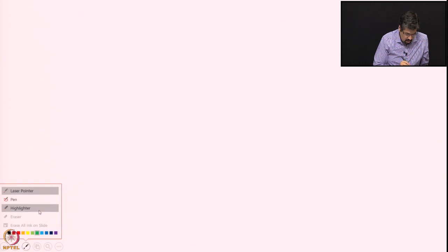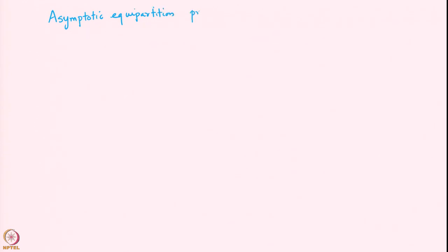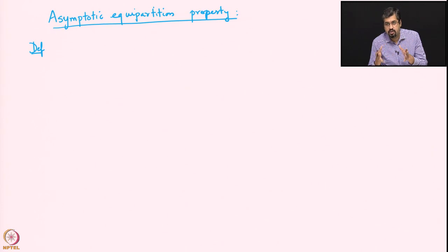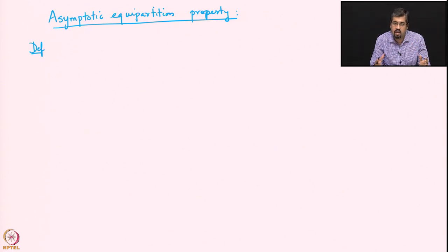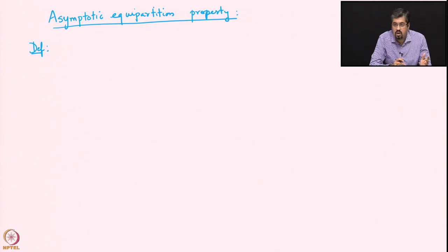This property is ensured by what is called the Asymptotic Equipartition Property. To introduce this property, we will give a construction of the set A_n(ε) and show that such a set actually exists. The construction goes through what is called a typical set.